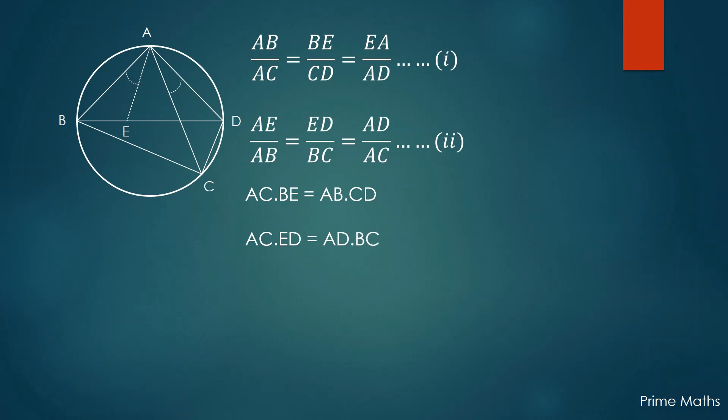Now just by adding the above two equations and noting that BE plus ED is equal to BD, we prove that the product of the diagonals of a cyclic quadrilateral is equal to the sum of the products of the opposite sides of the quadrilateral. This is Ptolemy's theorem.